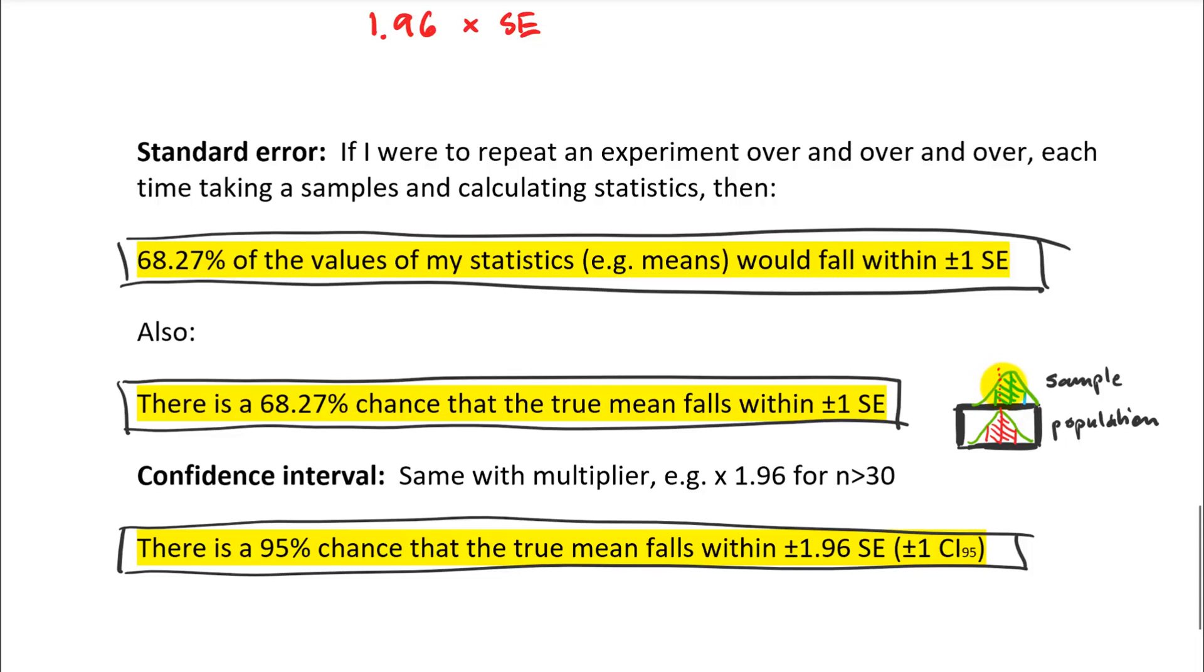So now what we can do is we can calculate the probability that that standard error or confidence interval captures this true mean. So if I add a multiplier to this, according to my percentiles, I can make a statement that there's a 95% chance that the true mean falls within plus minus 1.96 times the standard error.